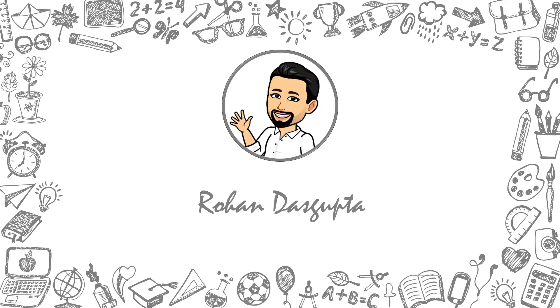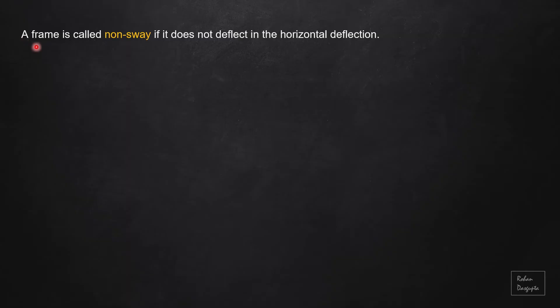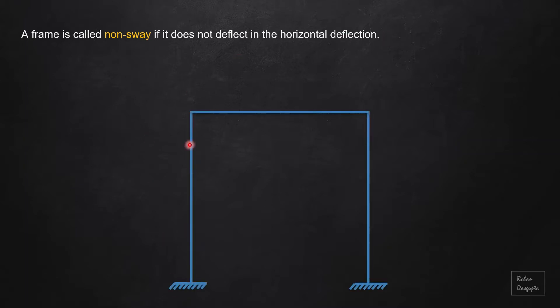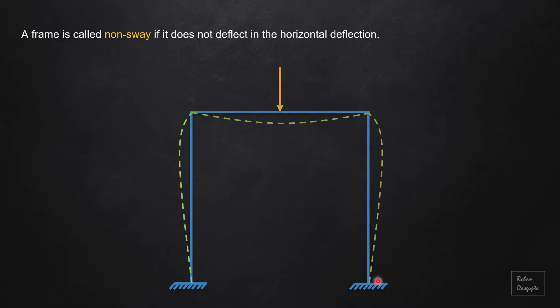A frame is called non-sway if it does not deflect in the horizontal direction. For example, if we have a portal frame where a point load acts right at the mid span of the beam section, then the deflected shape would be something like this. If you notice the rigid joints, there are rotations but the joints themselves are not deflecting either to the left or to the right, so there is no horizontal deflection — this is a non-sway frame.